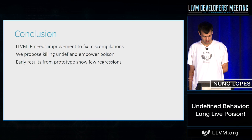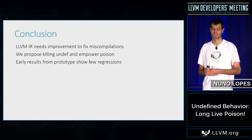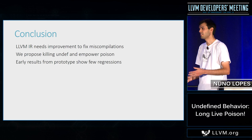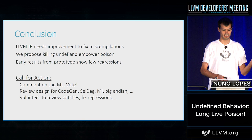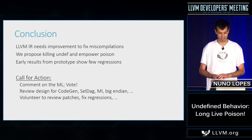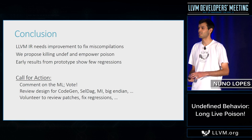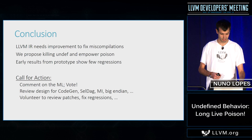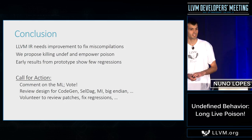To conclude: LLVM IR cannot stay the way it is today. It's great that we have poison and undef, but they are slightly broken. We propose a quite simple fix: just kill undef and use poison everywhere. Our early prototype results seem reasonable. Call for action: please go on the mailing list and comment on whether you like this, if it breaks your architecture, and please vote if you want to see this going through. If you work on CodeGen, please review the design — that's our weakest point. Please volunteer to review patches and help fix regressions in your favorite optimization.